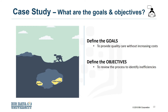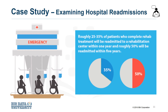Before even starting to collect data, the goals and objectives needed to be defined. After spending time to determine the goals and objectives, the team prioritized patient readmissions as an effective area for review. With the goals and objectives in mind, it was found that approximately 30% of individuals who finished rehab treatment would be readmitted to a rehab center within one year, and that 50% would be readmitted within five years. After reviewing some records, it was discovered that patients with congestive heart failure were at the top of the readmission list. It was further determined that a decision tree model could be applied to review the scenario to determine why this was occurring.